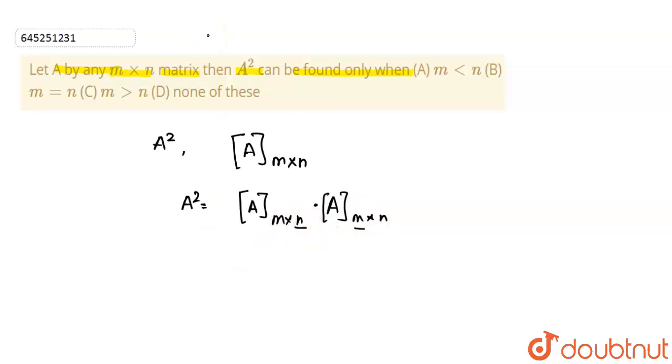So to fulfill the condition, my m should be equal to n, or we can say that number of rows should be equal to number of columns. So my correct option is option number B, which is m = n.